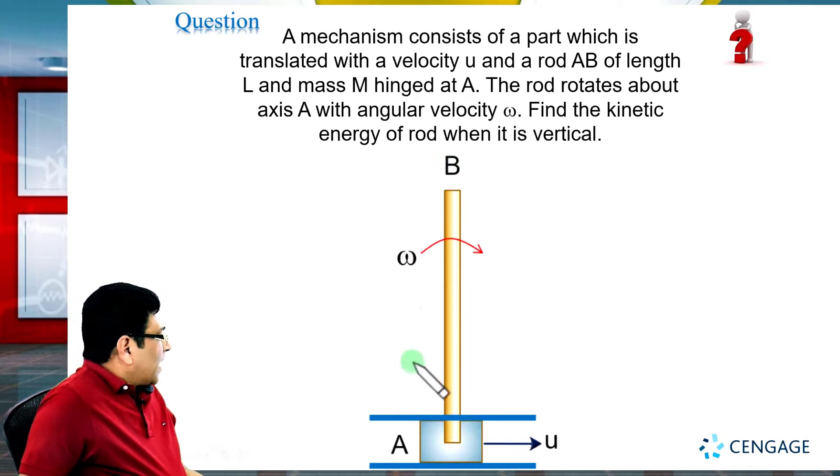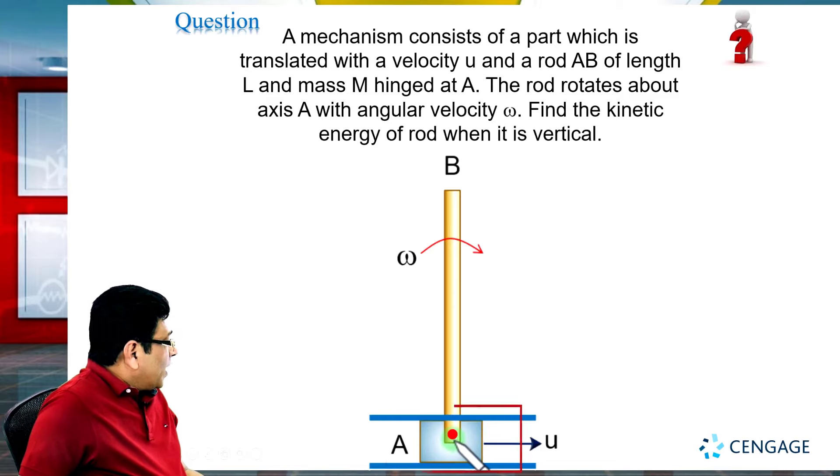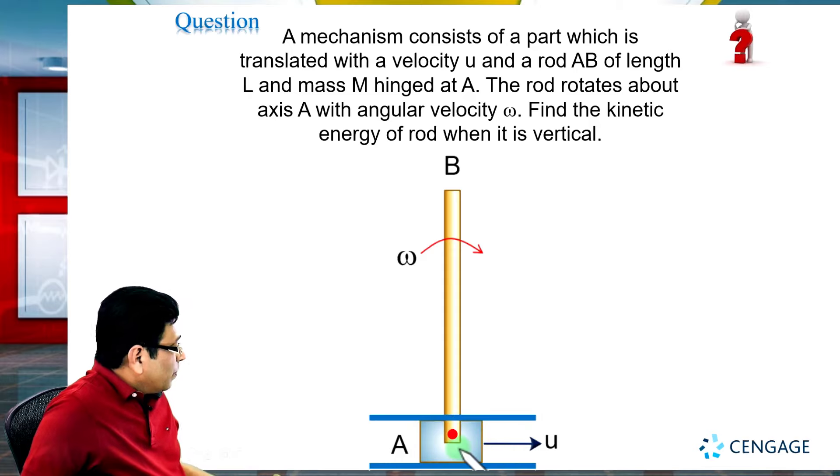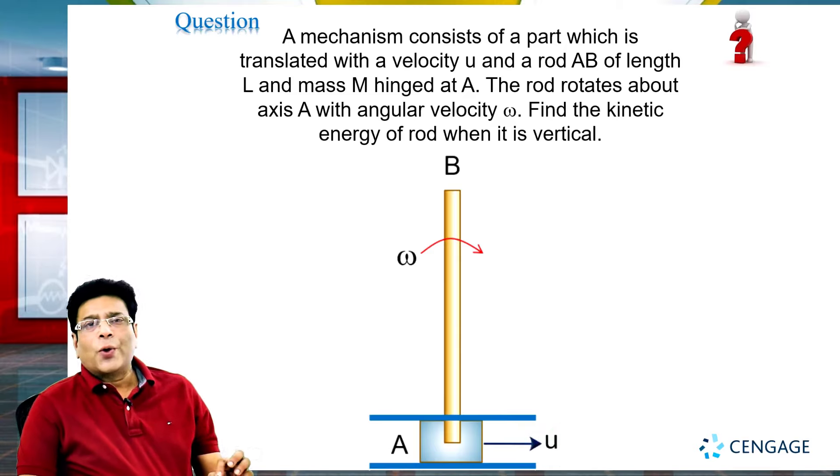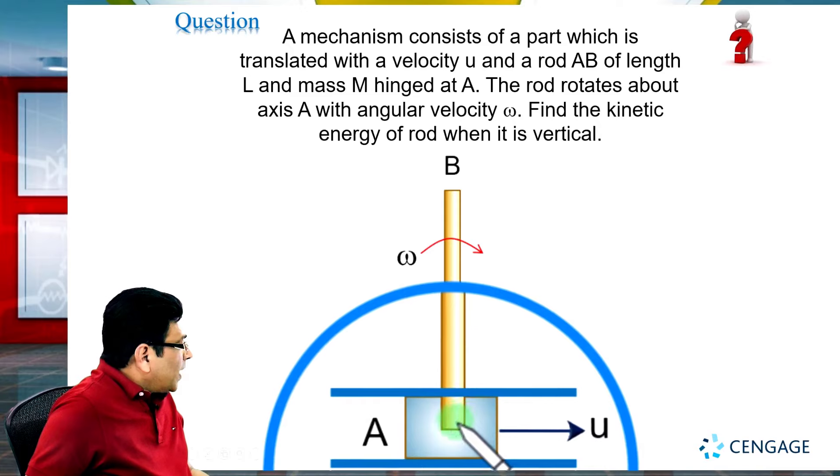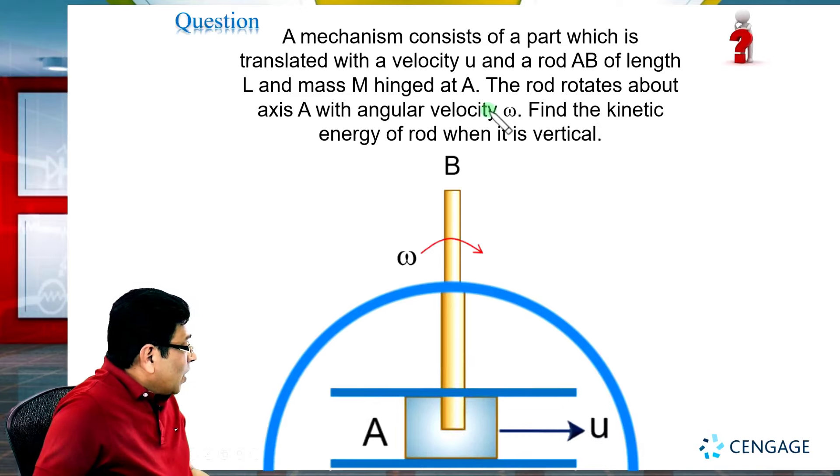From this diagram, we can say point A of the rod, that is the lowest point of the rod, will also move with velocity u because this point A is fixed with this block. The velocity of the block will be the same as the velocity of the rod's lowest point. The rod is rotating about an axis passing through A with angular velocity omega.